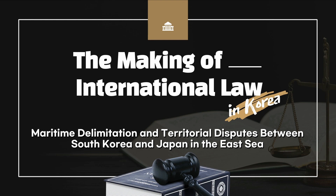Dokdo consists of two rocky structures and 32 smaller outcroppings in the East Sea, with a combined land area of 1.18 square kilometers. The East Islet, Dokdo, has a circumference of 1.9 km, and the West Islet, Sodo, has a circumference of 2.8 km.